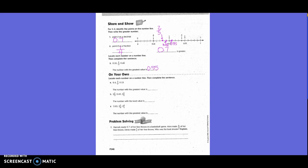On your own, locate each number on a number line. Then complete the sentence. You guys are going to do this with your partner, and you can use this number line up here above. You'll just have to mark your spots and remember what you're using to compare. You guys can go ahead.